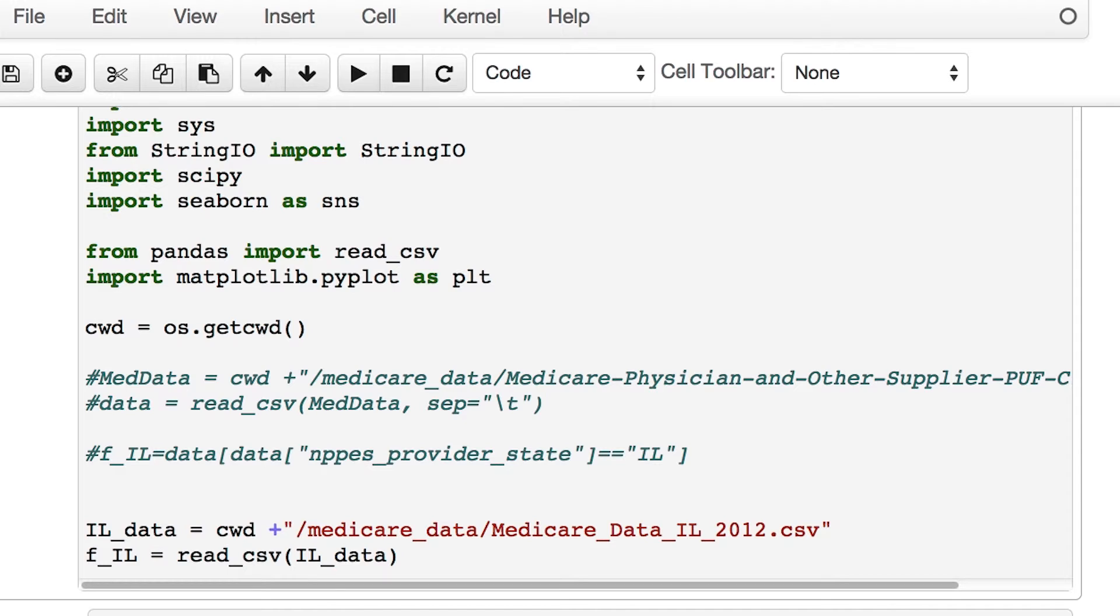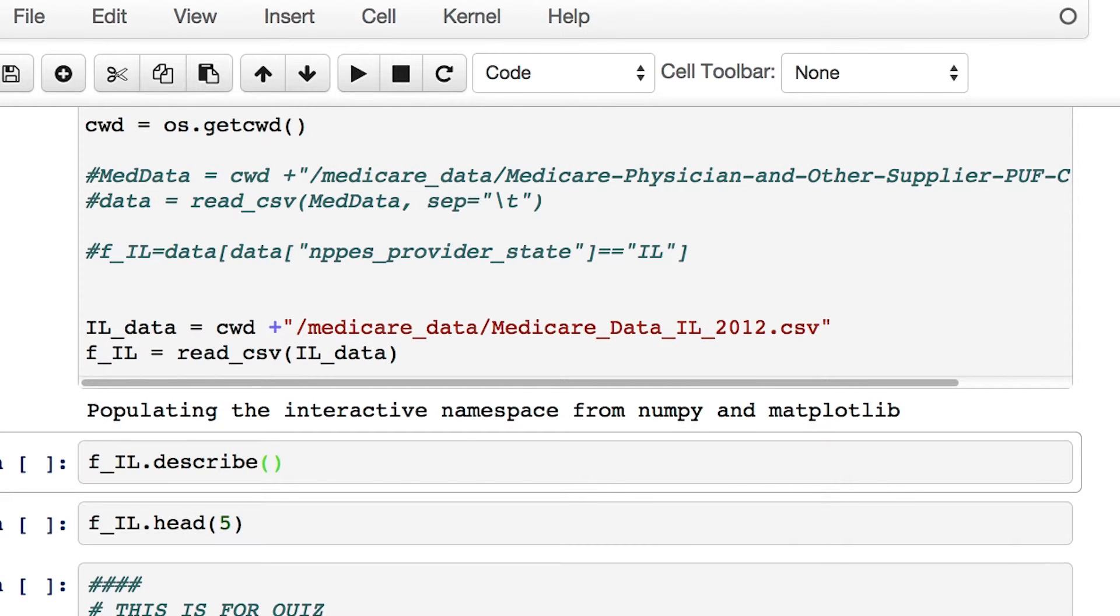Now we use the read_csv library from pandas to read the data and load it into a data frame. As before, to run this piece of code, we just use the play button here. Once the data set is finished loading, you will receive a message like this.